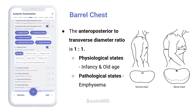When the ratio of the anteroposterior to transverse diameter is 1:1, the chest resembles the shape of a barrel. Barrel chest is seen in physiological states like infancy and old age, and in pathological states like emphysema.